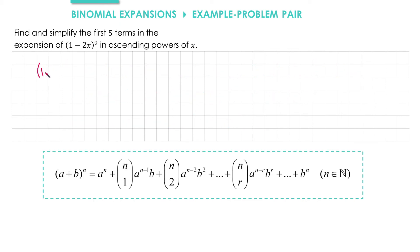So we're doing 1 minus 2x to the power of 9. So the first term will just be 1 to the power of 9.